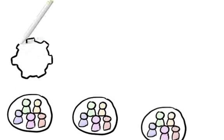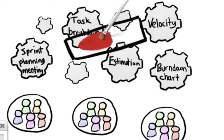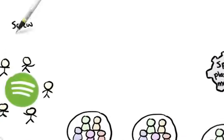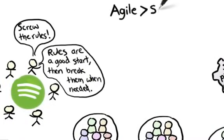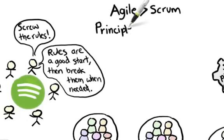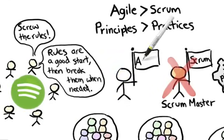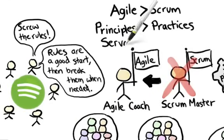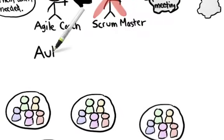we had grown into a bunch of teams and found that some of the standard scrum practices were actually getting in the way. So we decided to make all this optional. Rules are a good start, but then break them when needed. We decided that agile matters more than scrum and agile principles matter more than any specific practices. So we renamed the scrum master role to agile coach because we wanted servant leaders more than process masters. We also started using the term squad instead of scrum team and our key driving force became autonomy.